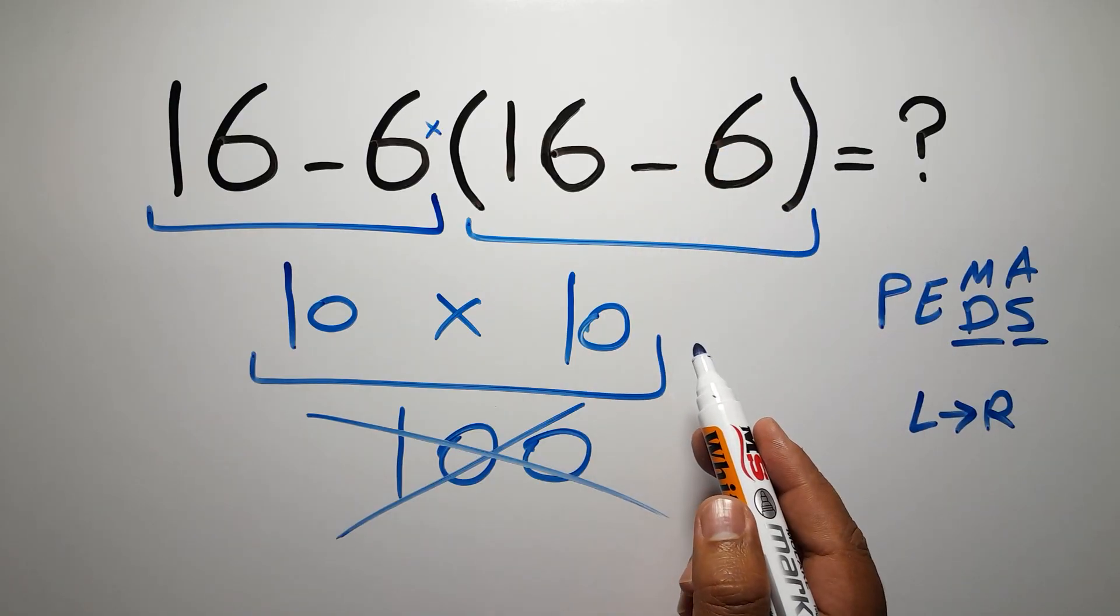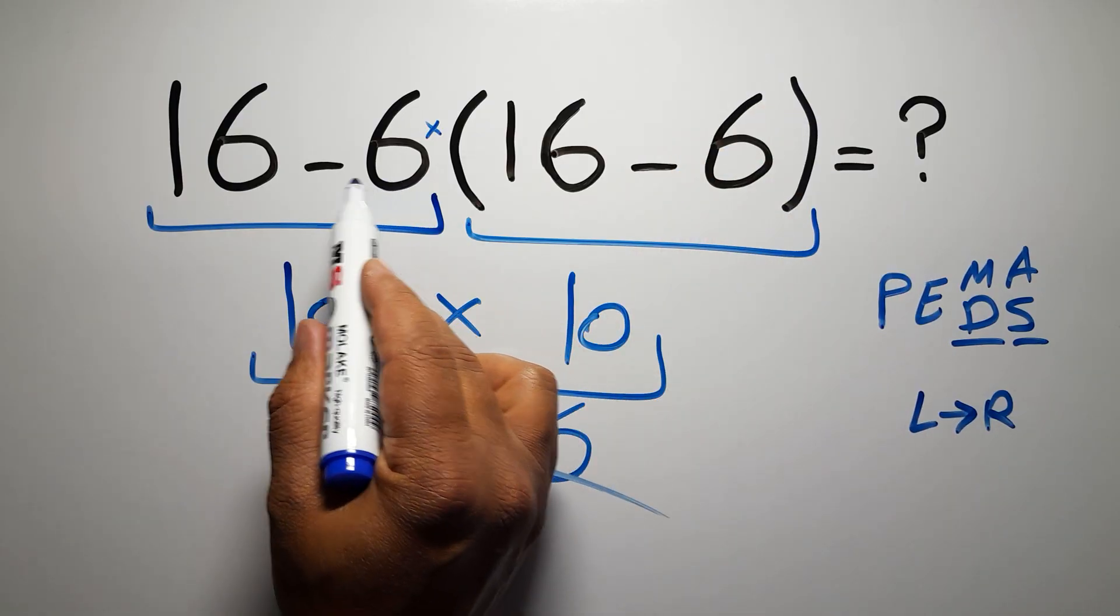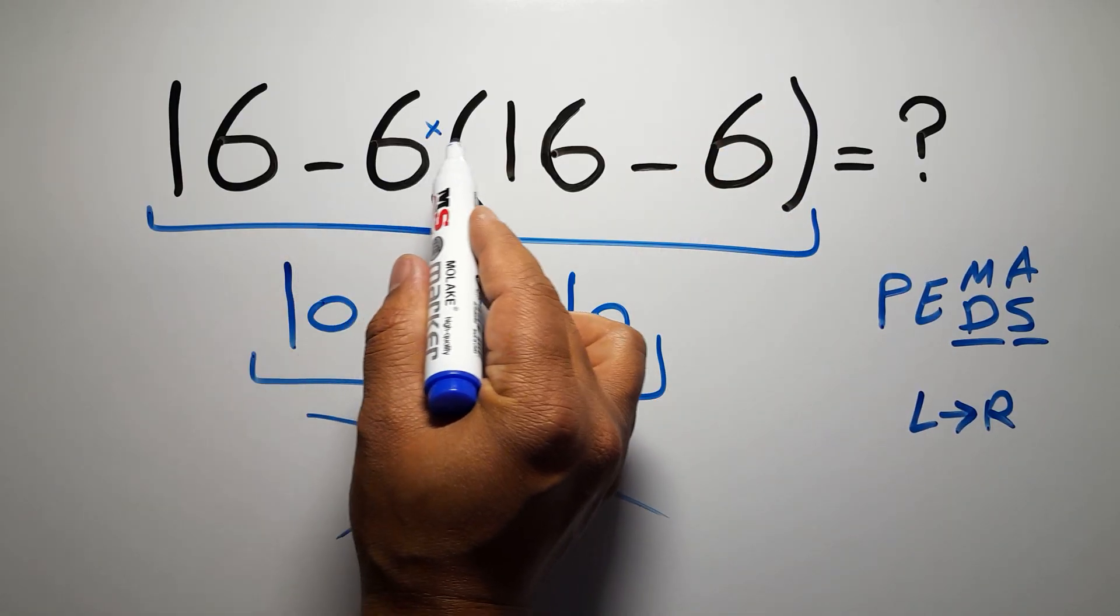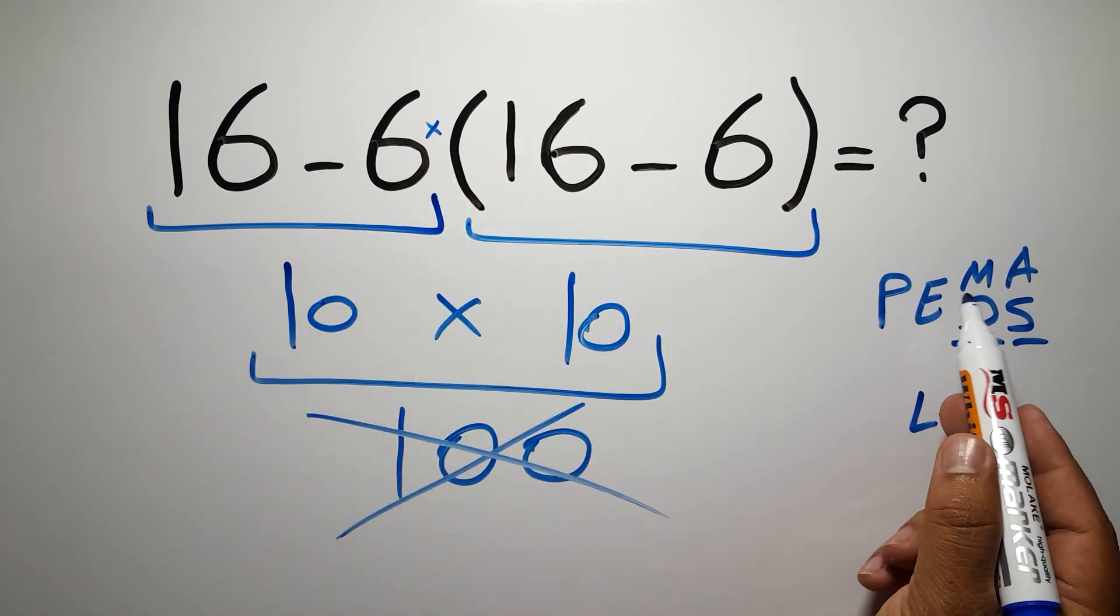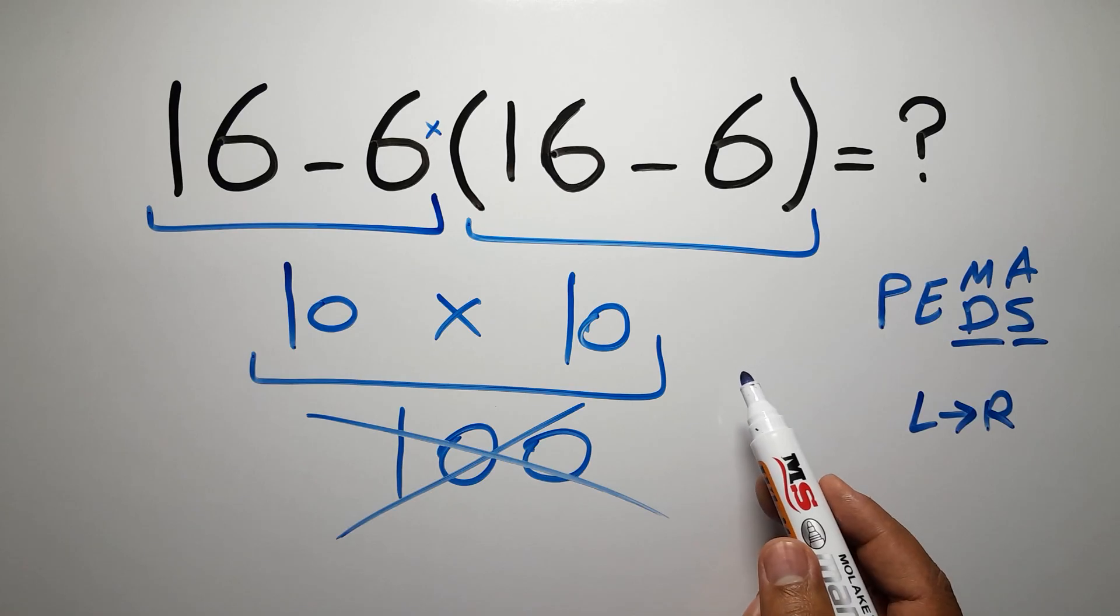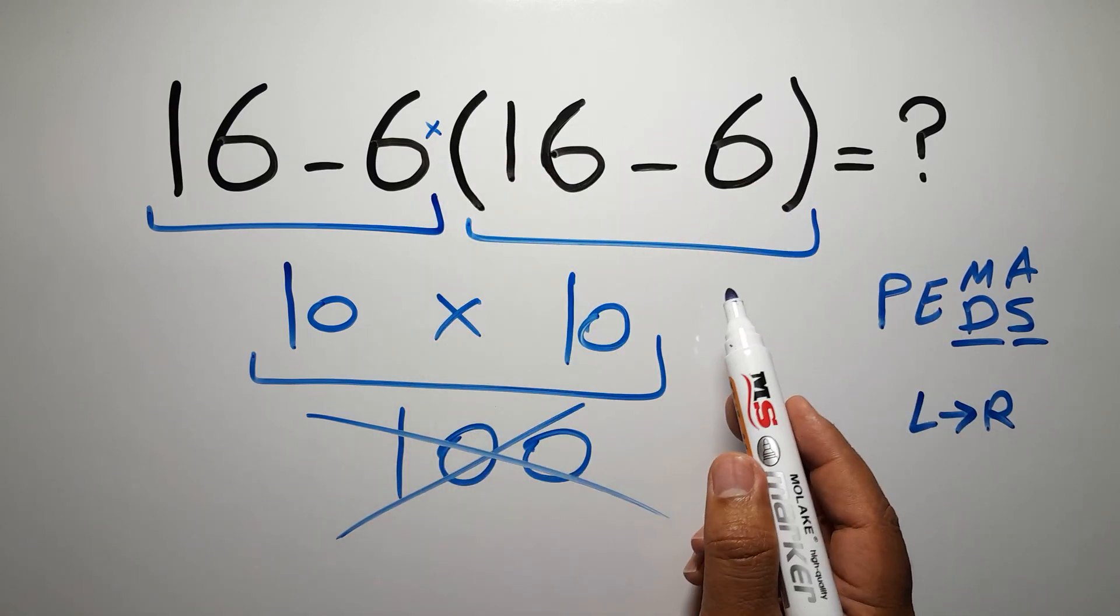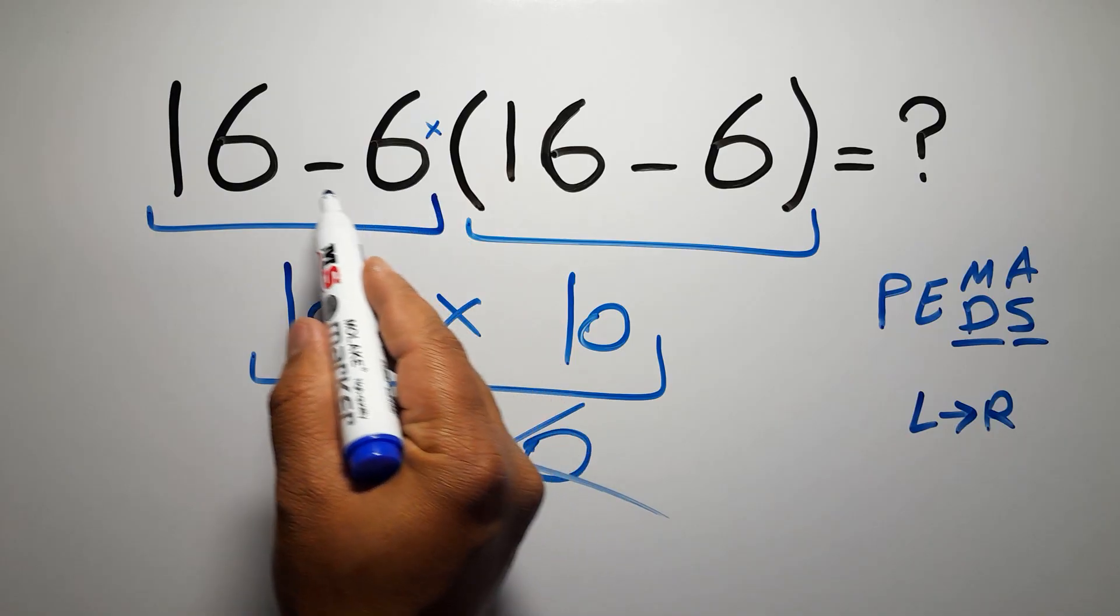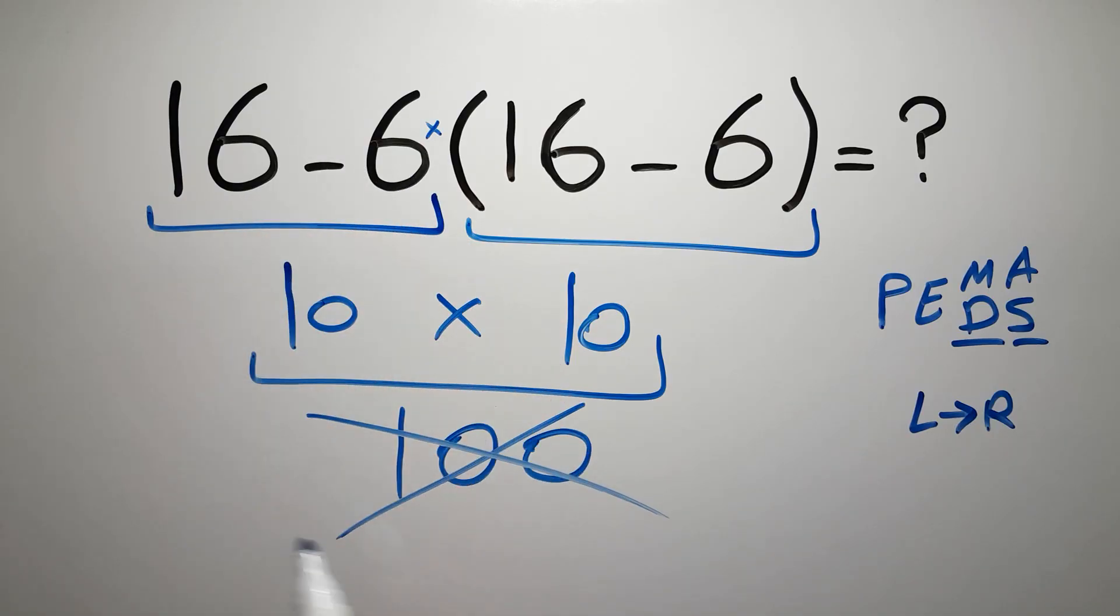So first we have to do these parentheses, and after these parentheses we have one subtraction and one multiplication. Multiplication comes before subtraction in PEMDAS. Therefore, first these parentheses, then this multiplication, and finally this subtraction. If you do this subtraction before this multiplication or this parentheses, it is wrong.